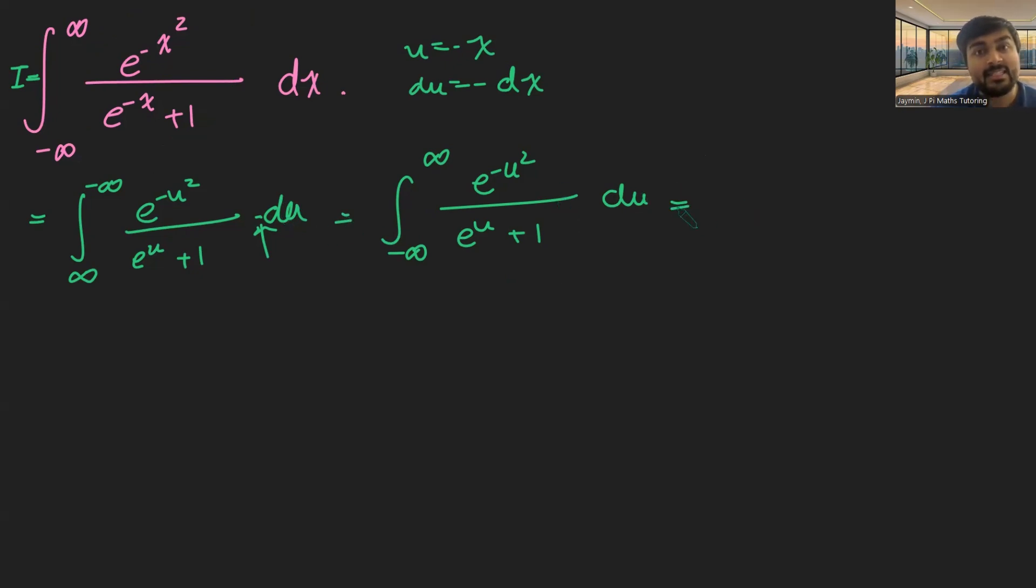And so let's divide this by e to the minus u. So this is the integral from minus infinity to infinity of e to the minus u times e to the minus u squared, and then on the bottom, I've got 1 plus e to the minus u du.